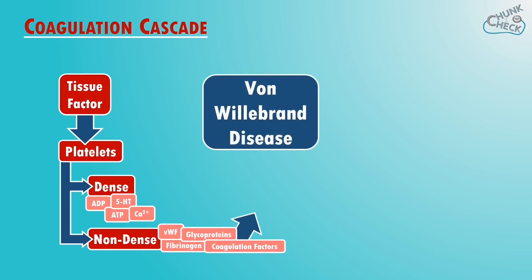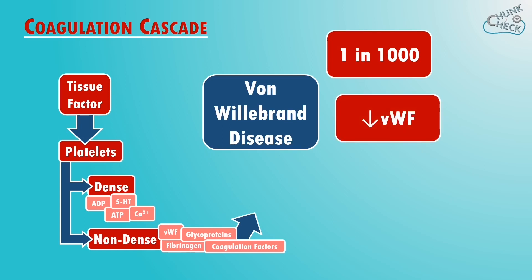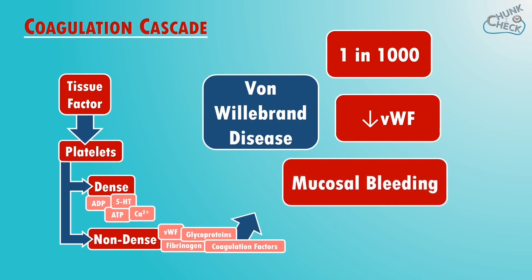It's worth mentioning von Willebrand disease here, which is the commonest inherited bleeding disorder affecting about one in a thousand people. In this disease there is a reduced amount of von Willebrand factor which leads to increased bleeding. The bleeding seen in this condition is usually mucosal bleeding, so bleeding gums and nosebleeds are usually seen along with some easy bruising.